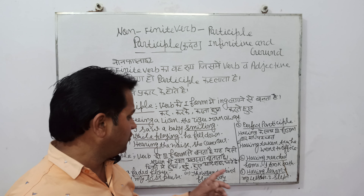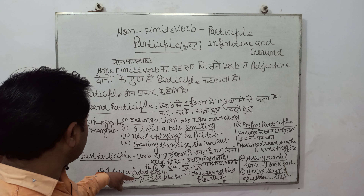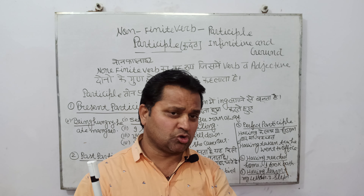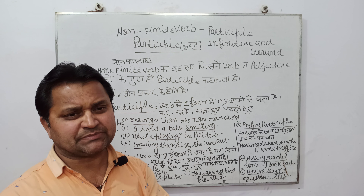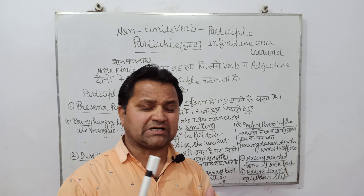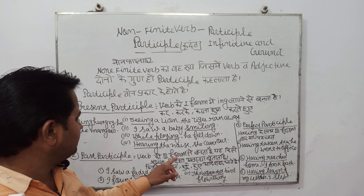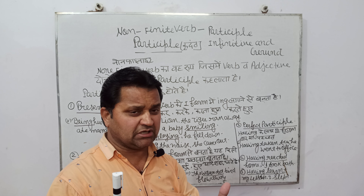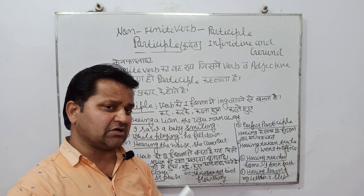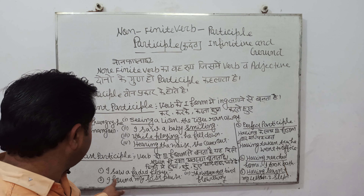Being hungry, he ate mangoes. Bhooka hokar usne aam khaye. Ab dekh lete hain number 2 participle, yaani second participle hota hai — past participle. Past participle jo hai, wo verb ki third form se banta hai. Aur iske Hindi verb ke roopon mein hota hai — hua, hui, hue. Aur ye kisi noun ki dasha, avastha ko dikhata hai.